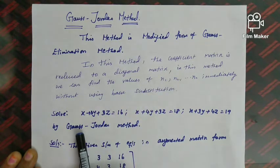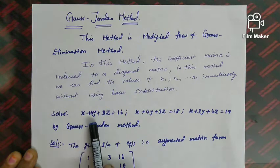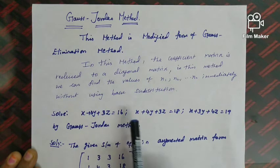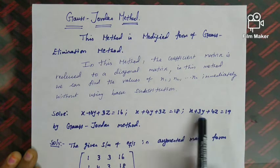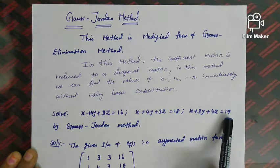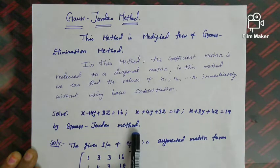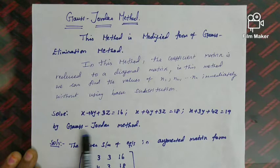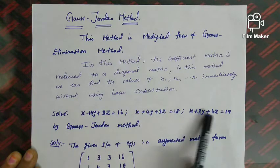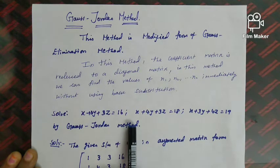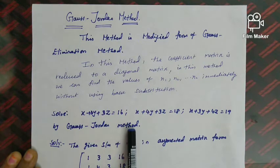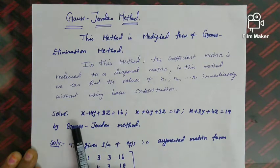Look at the first question: solve x + 3y + 3z = 16, x + 4y + 3z = 18, x + 3y + 4z = 19 by the Gauss-Jordan method. If the method is mentioned in the question, we use that method only.